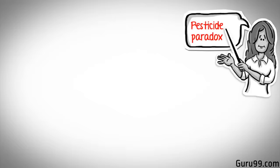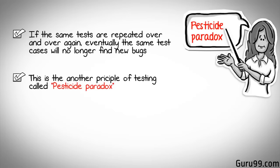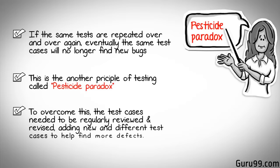But this approach has its own problems. If the same tests are repeated over and over again, eventually the same test cases will no longer find new bugs. This is another principle of testing called the pesticide paradox. To overcome this, the test cases need to be regularly reviewed and revised, adding new and different test cases to help find more defects.